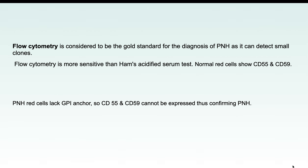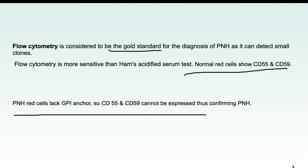The gold standard test for PNH is flow cytometry. Flow cytometry is more sensitive than the Ham's test. Normal red cells show expression of CD55 and CD59, whereas in PNH this expression is absent, allowing confirmation of the diagnosis.